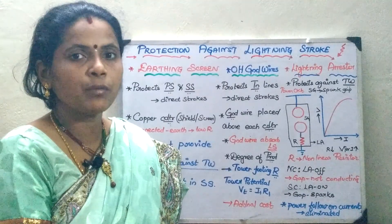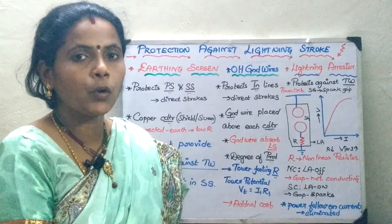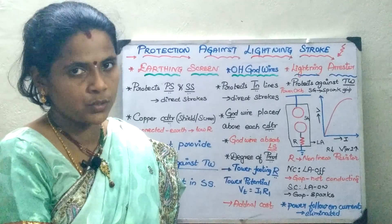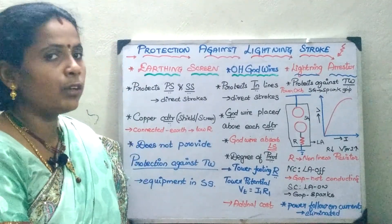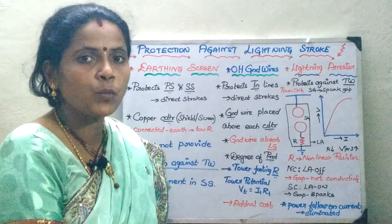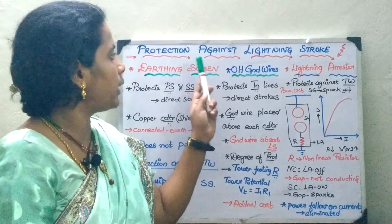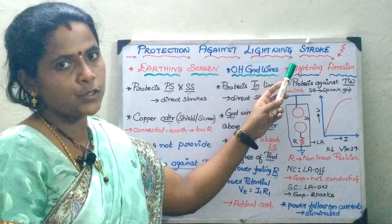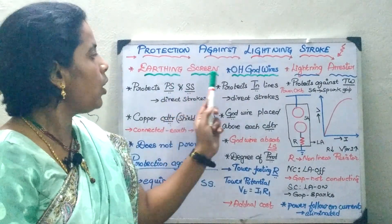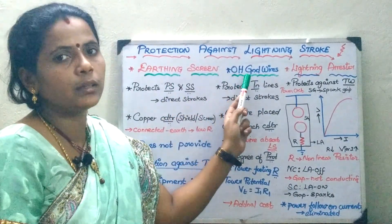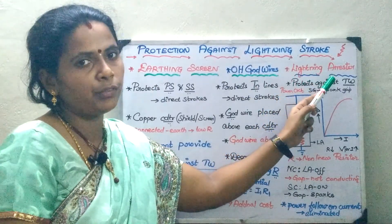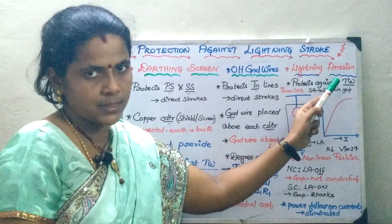In the earlier session we have seen about the different types of lightning strokes. In today's session we will be seeing about what are the protective devices we are going to use to protect against this lightning stroke. They are nothing but the earthing screen, or you can go in for the overhead ground lines, or the third thing you can go in for your lightning arrester.